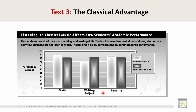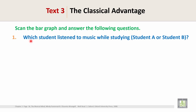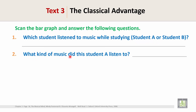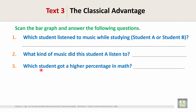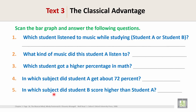Here are the percentages and subjects: math, writing, and reading. Scan the bar graph and answer the following questions. Question 1: Which student listened to music while studying — Student A or Student B? Question 2: What kind of music did Student A listen to? Question 3: Which student got a higher percentage in math? Question 4: In which subject did Student A get about 72 percent? Question 5: In which subject did Student B score higher than Student A?